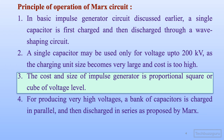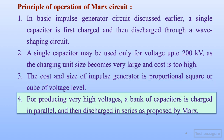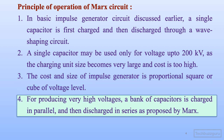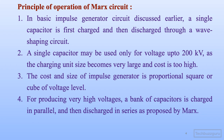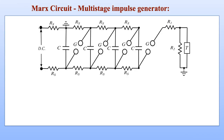The cost and size of the impulse generator is proportional to the square or cube of the voltage level. For producing very high voltages, a bank of capacitors is charged in parallel and then discharged in series, as proposed by the Marx circuit. This is the basic principle of operation of the Marx circuit.